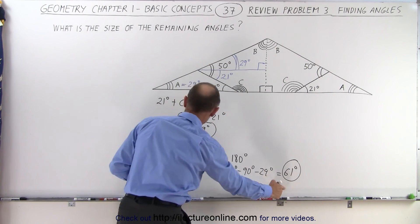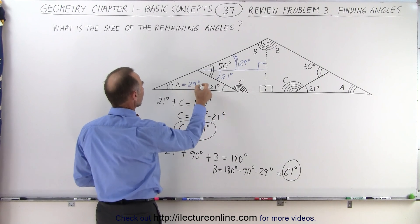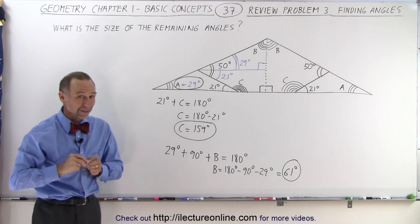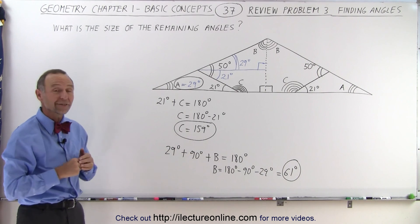So that means B is 61 degrees, C is 159 degrees, and A is 29 degrees. And that's how we find the missing angles on this big triangle. That's how it's done.